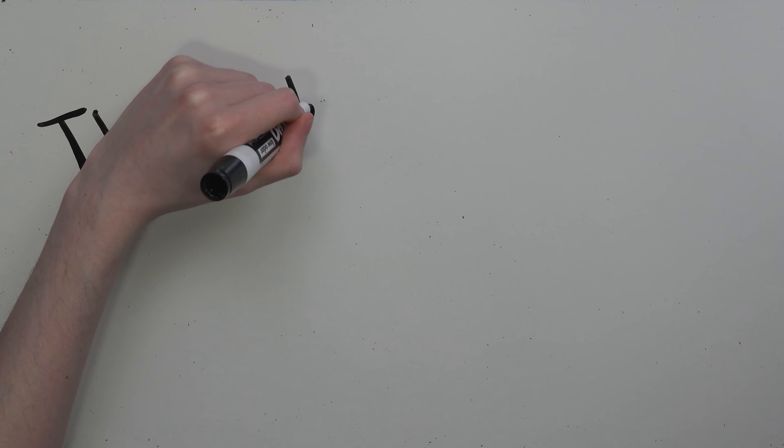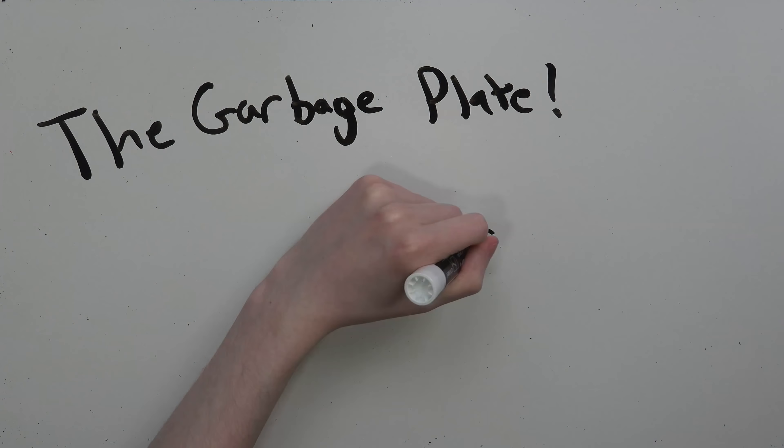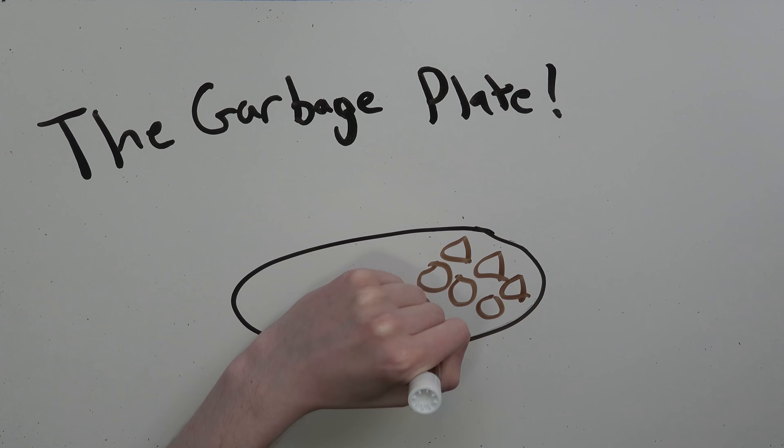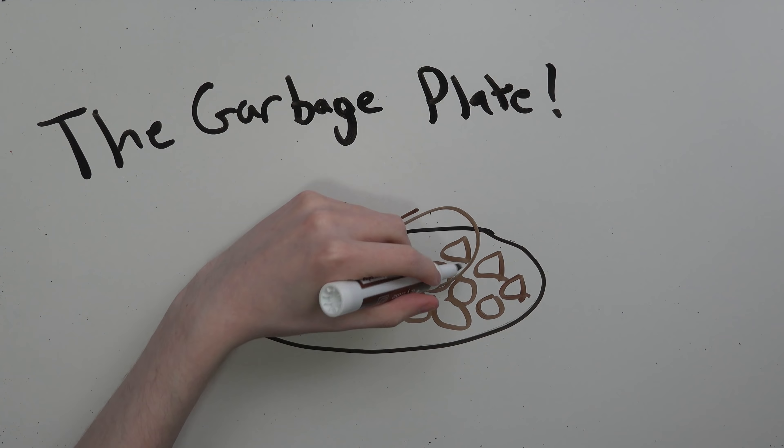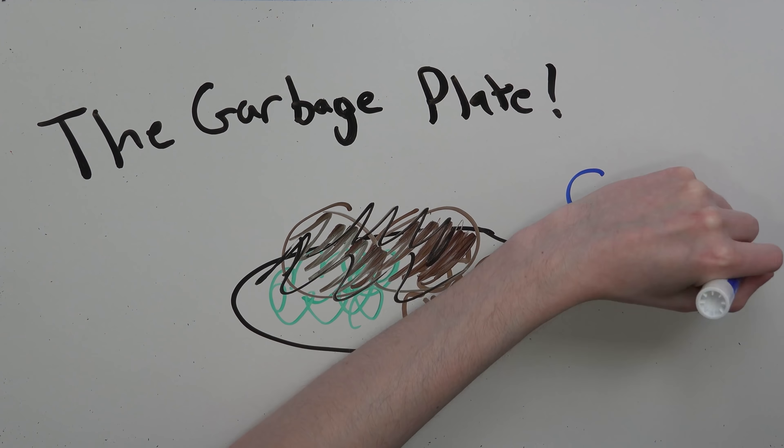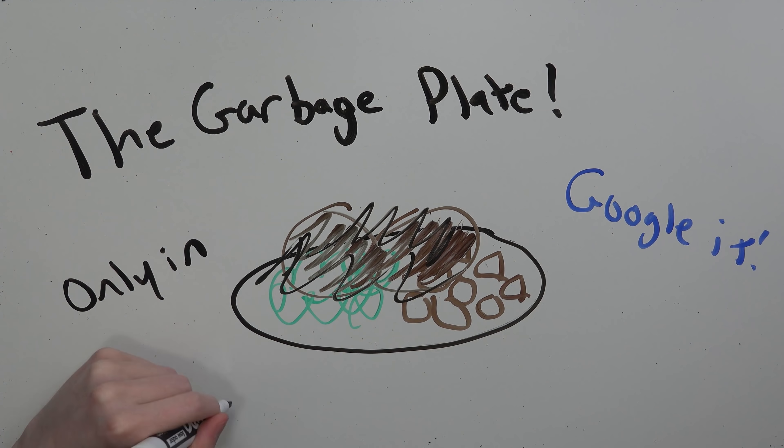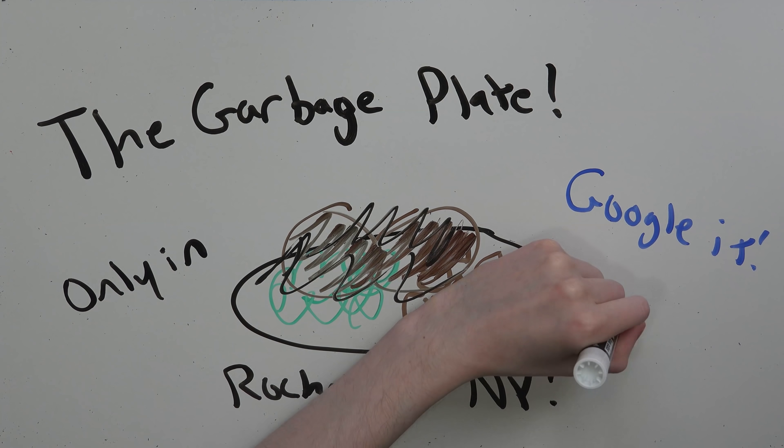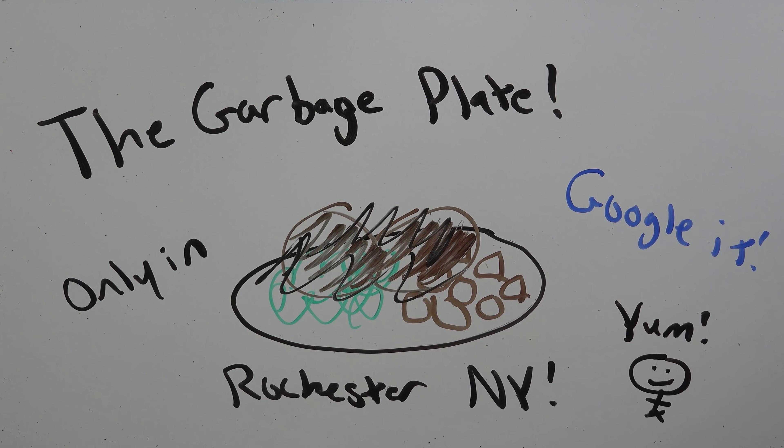When I was about seven years old, my aunt and uncle introduced me to the garbage plate. The garbage plate was created in Rochester, New York, and you could only get it here, at least the real one, at Nick Tahoe's. It's basically a plate with half mac salad, half home fries, and your choice of two burgers or hots. The whole thing is covered in meat hot sauce, onions, and mustard. It sounds gross, but I've been eating them for years.